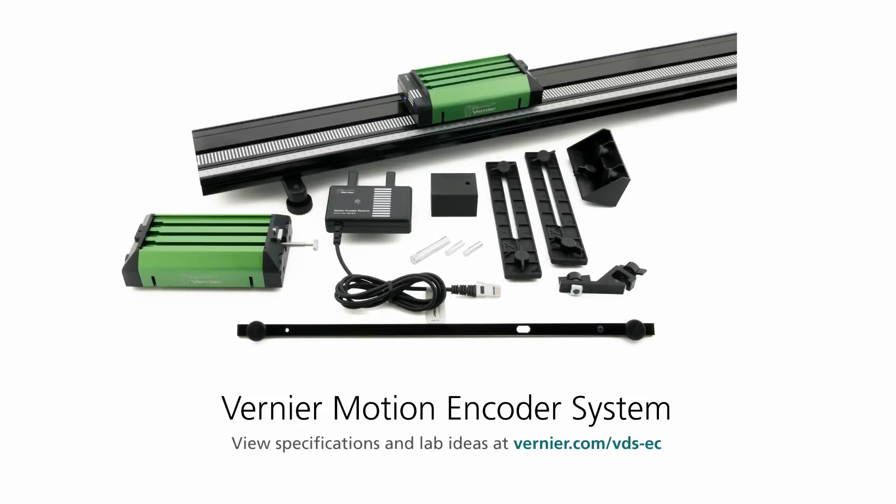The Vernier Motion Encoder System allows you and your students to measure the position of a cart as a function of time easily and with very high accuracy. It's used a bit like an ultrasonic motion detector, but doesn't have the accompanying frustrations of detection of stray objects and other kinds of interference in the classroom.